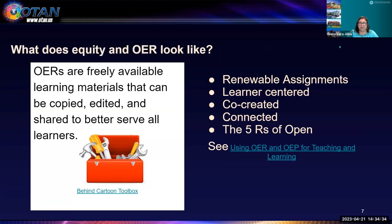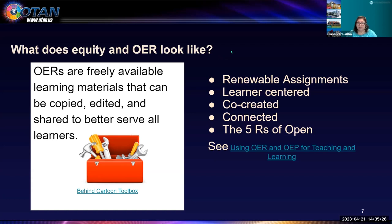Let's start by discussing what equity and OER look like. OERs are freely available learning materials that can be copied, edited, and shared to better serve all learners. These types of materials are renewable assignments — meaning you can change them, you can update them, whether you created them or not. Maybe somebody let you use their materials, or you found some of these resources on open educational resource repositories. They're renewable: you can change them, you can modify them. They are usually learner-centered, created with students in mind.